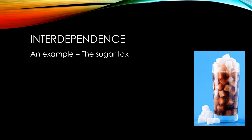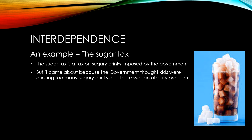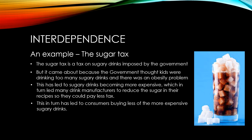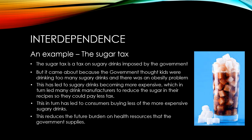Finally, let's look at a practical example of interdependence: the sugar tax. The sugar tax was imposed by the UK government because the government thought that consumers — children in particular — were drinking too many sugary drinks, and there was likely to be an obesity problem. This led to sugary drinks becoming more expensive, which in turn led many drink manufacturers to reduce their sugar content in their recipes so they could pay less tax. This has led to consumers buying less sugary drinks, which hopefully will reduce the future burden on health resources that the government supplies. You can see that all of the different groups within the economy are highly interrelated in this example.